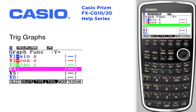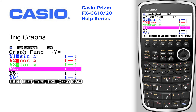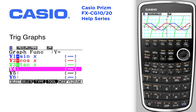Let's take a look at drawing some trig graphs. In the graph menu, we're going to graph sine, cosine, and tangent. So F3 — we want a tangent of x. We're currently in radian mode, as you can tell at the top. We'll go ahead and press draw, F6. There's my three graphs.